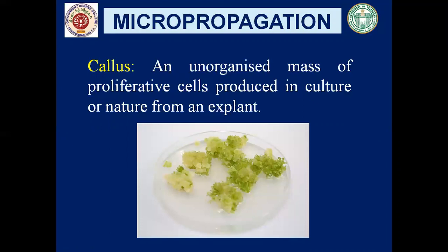When you place this callus in a nutrient medium having appropriate plant hormones, it will get differentiated into root and shoot, and it will form a plantlet. Callus is an unorganized mass of proliferating cells produced in culture or in nature from an explant or a plant organ.